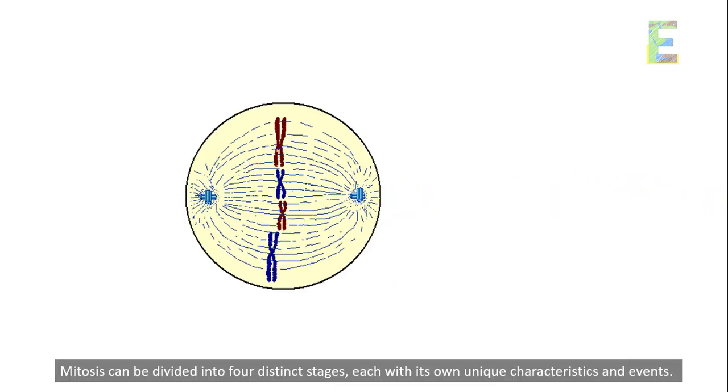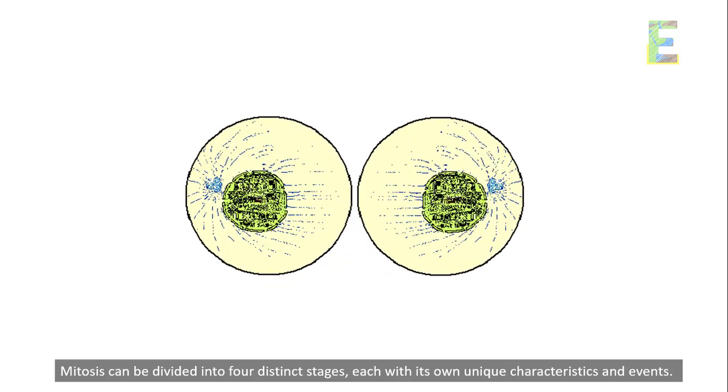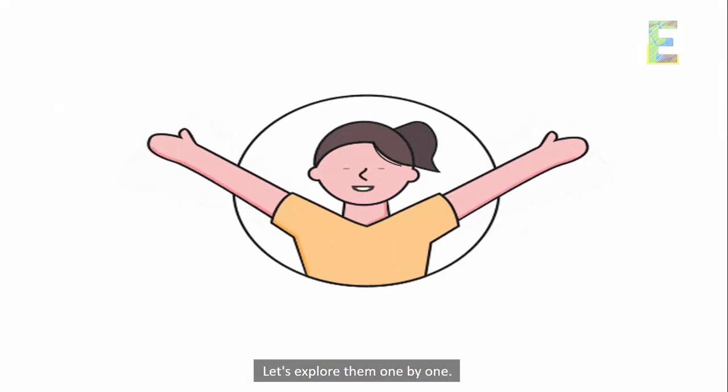Mitosis can be divided into four distinct stages, each with its own unique characteristics and events. Let's explore them one by one.